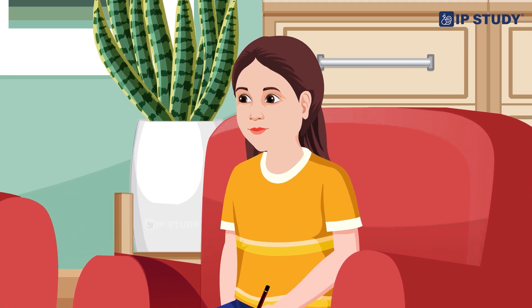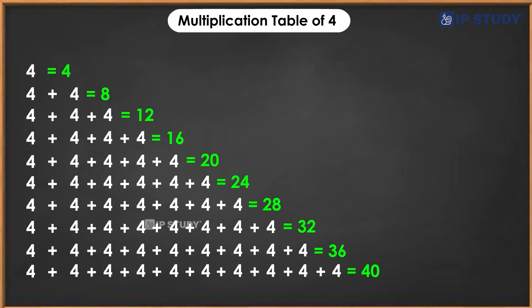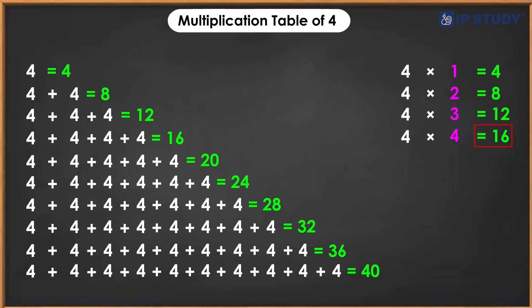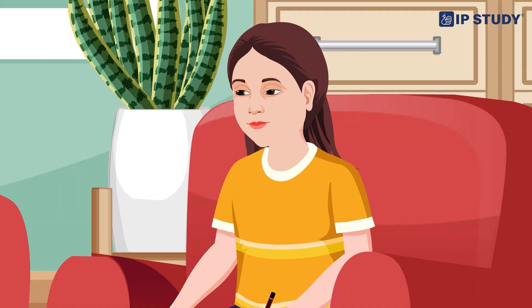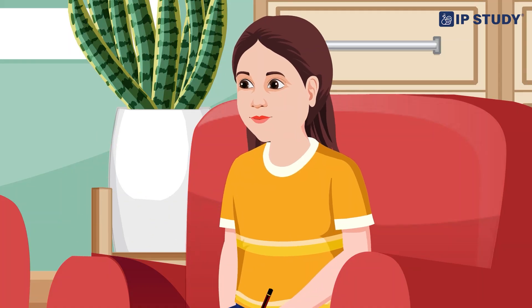Now let's start with four. Sure, one times four is four, two times four is eight, three times four is twelve, four times four is sixteen, five times four is twenty, six times four is twenty-four, seven times four is twenty-eight, eight times four is thirty-two, nine times four is thirty-six, ten times four is forty. What next dad?